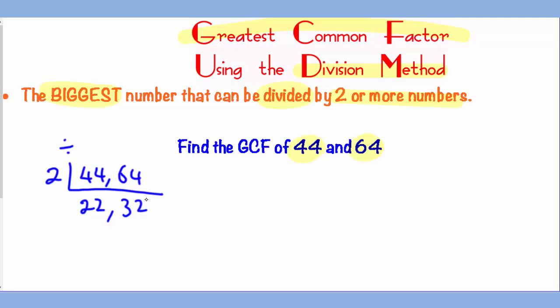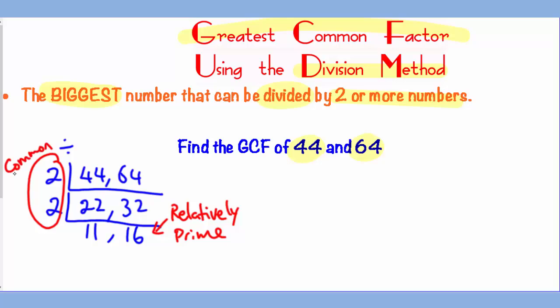Notice how 22 and 32 still share the common factor which is 2 again, and 22 divided by 2 gives you 11, 32 divided by 2 gives you 16. And you are done right there because 11 and 16 are relatively prime. Since GCF stands for the greatest common factor, you will combine the common factors on the side together to get the biggest, which in this case the GCF will be 2 times 2, 4.